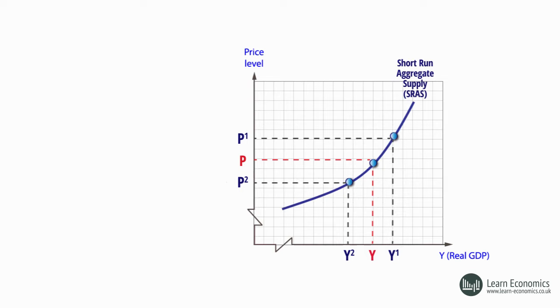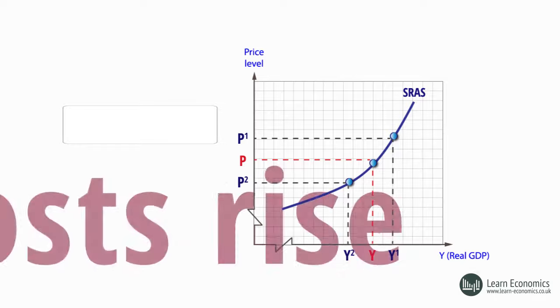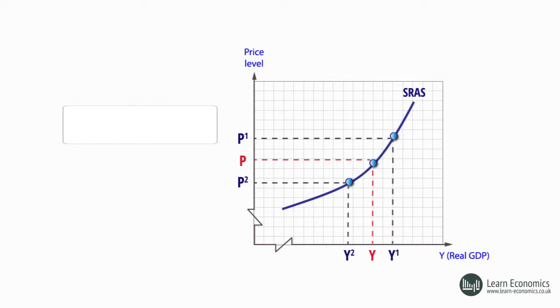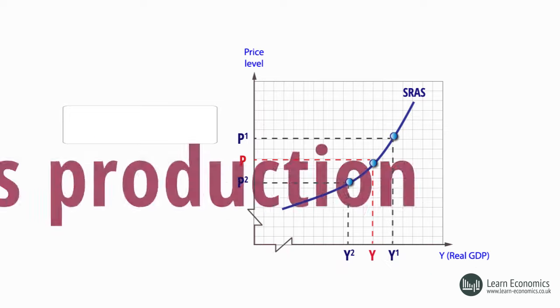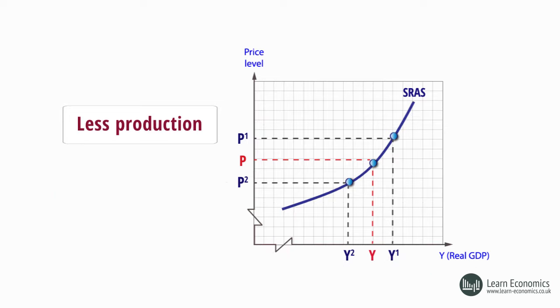If we hold the price level constant, a change in any other factor associated with supply will shift the SRAS curve. This includes, firstly, expectations about the future price level. For example, if the price level is expected to rise next year, rational producers may expect workers to bid for increases in nominal wages to maintain their same real wage. Also, other input costs will rise as other firms in the supply chain will also increase their prices. This may lead them to plan to produce less this year, and SRAS will shift to the left.